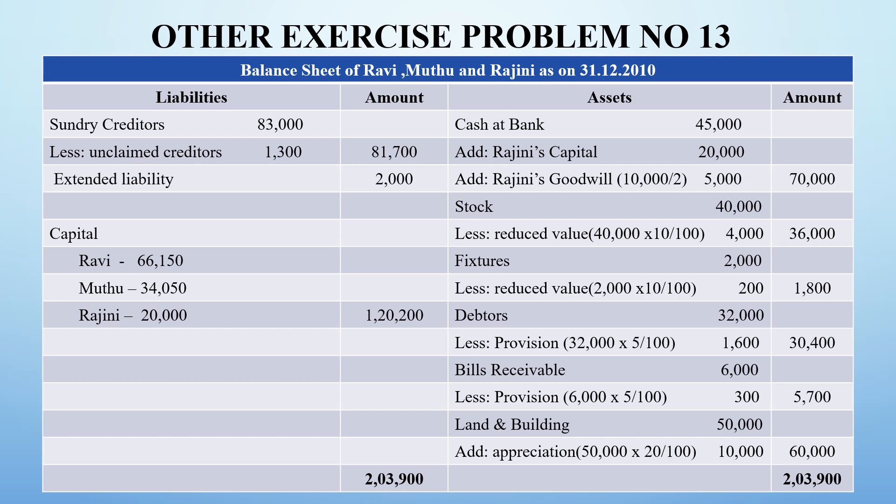With all the adjustments applied, the business value increases in the balance sheet. The original sundry creditors were Rs. 83,000, reduced by Rs. 1,300, giving Rs. 81,700. A liability of Rs. 2,000 from the damage claim has been added. The total capital is: Ravi Rs. 66,150, Muthu Rs. 34,050, and Rajini Rs. 20,000, giving a total capital of Rs. 1,20,200.